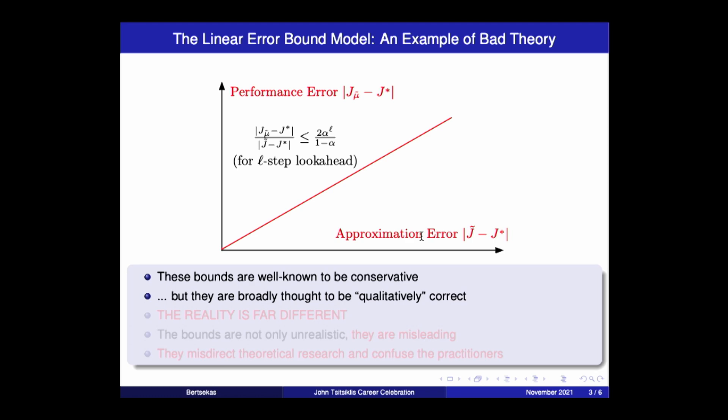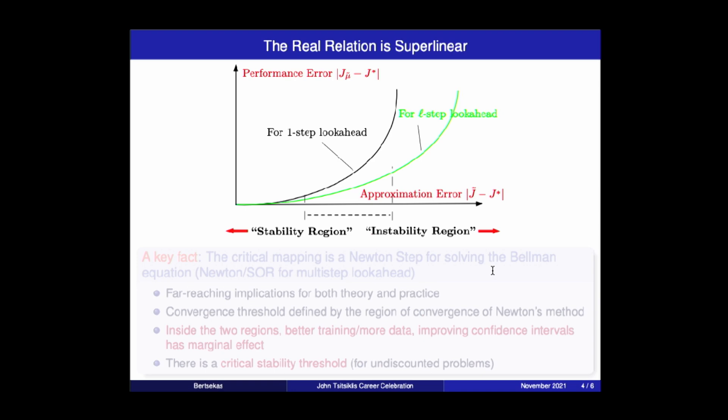Now, the reality I found out relatively recently while teaching reinforcement learning at ASU. The reality is far different. This bound has no connection to reality. The relationship is not linear at all. And the bound is not only unrealistic, it's misleading. It takes you along conceptually wrong paths. And in this sense, they misdirect theoretical research and also confuse the practitioners. The true relation is not linear, but rather it is super linear.